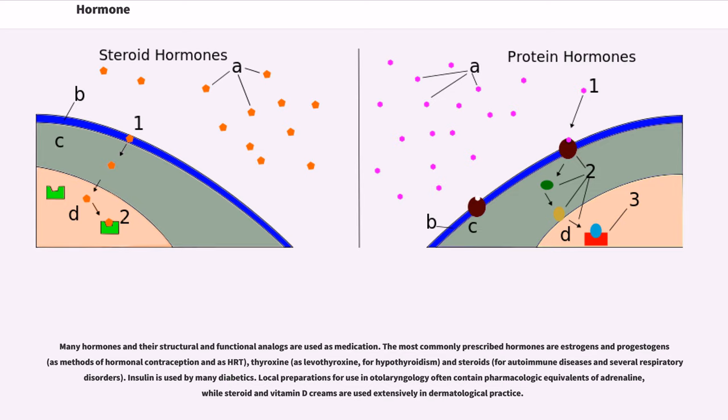Many hormones and their structural and functional analogs are used as medication. The most commonly prescribed hormones are estrogens and progestogens as methods of hormonal contraception and as HRT, thyroxine, as levothyroxine, for hypothyroidism, and steroids for autoimmune diseases and several respiratory disorders. Insulin is used by many diabetics. Local preparations for use in otolaryngology often contain pharmacologic equivalents of adrenaline, while steroid and vitamin D creams are used extensively in dermatological practice.